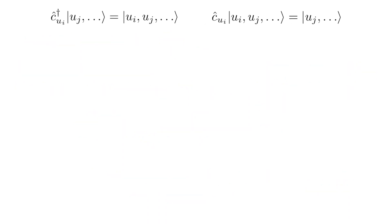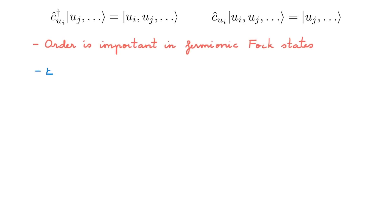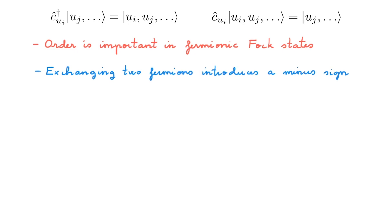When we write the u single particle terms, the order is important in fermionic Fock states. In particular, exchanging two fermions introduces a minus sign in the Fock state. This means that when we apply the creation and annihilation operators we need to be careful about the order. We define the creation operator as adding a particle in state ui at the beginning of the ordered list. If we then want to move this single particle state to another position we need to account for all the minus signs arising from every particle exchange. Similarly, the annihilation operator removes a particle in state ui only when it is at the beginning of the ordered list, so we must first move it there, accounting for all minus signs, before annihilating it.